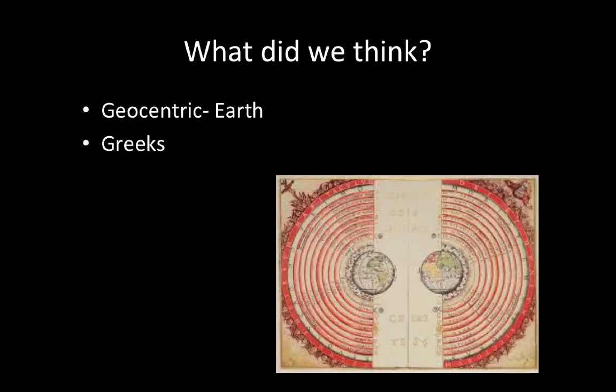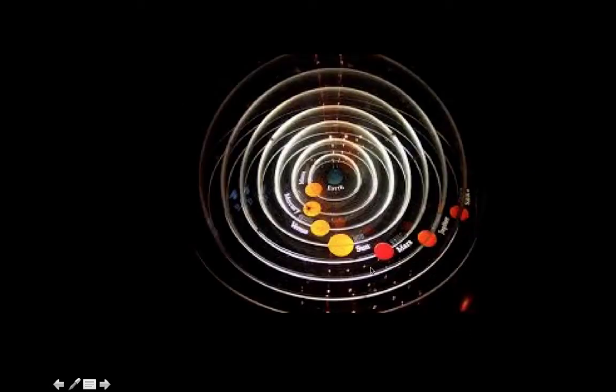In astronomy, what did we used to think? The geocentric model. The moon, sun, and other known planets revolved around the Earth. It was proposed by the ancient Greeks. They based this off some biblical things that said the Earth was firm and the Earth stood still. They proposed that the Earth was in the center and everything else rotated around it.